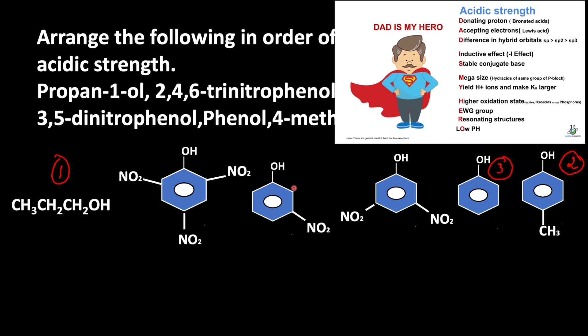But such delocalization is very effective if that nitro group is present in ortho and para position. So when compared to the meta, ortho and para positions, if the electron withdrawing group is present, the acidic strength is very high.